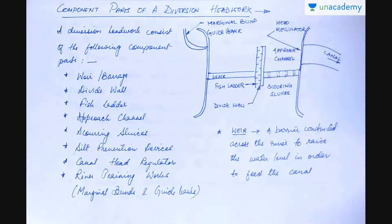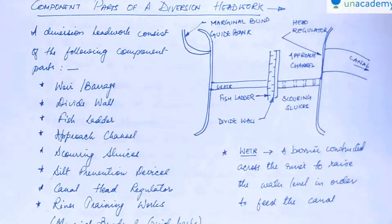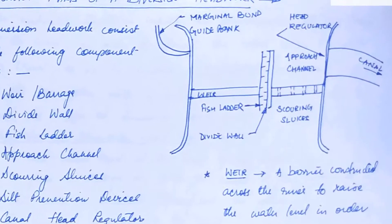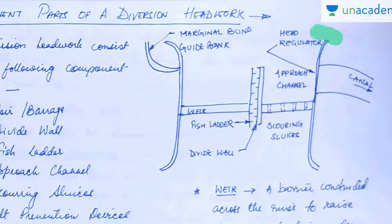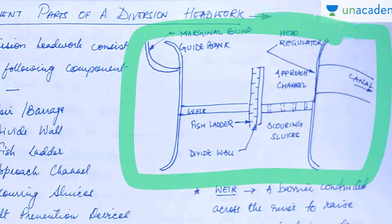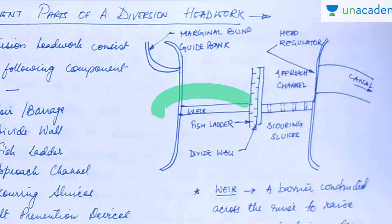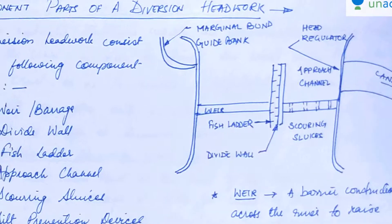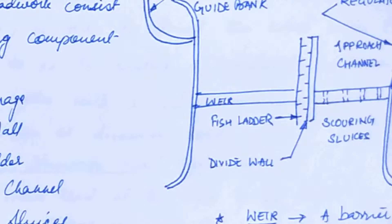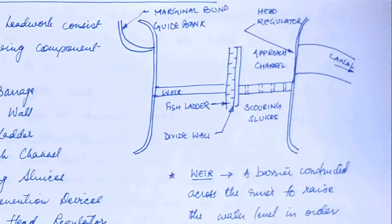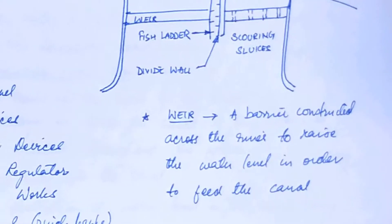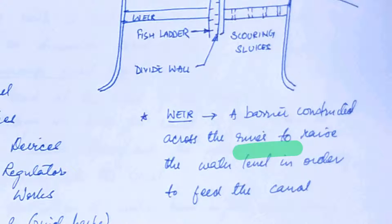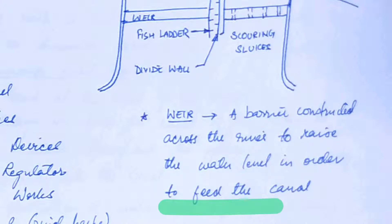Now let's see the different components of a diversion head work. I've drawn a diversion head work which consists of all these different structures. The first and most important one is the weir. A weir is a barrier constructed across the river to raise the water level in order to feed the canal.